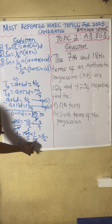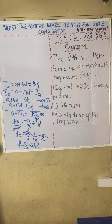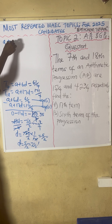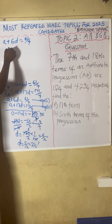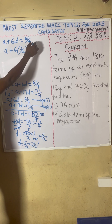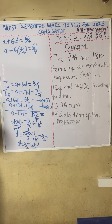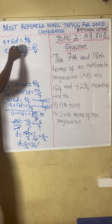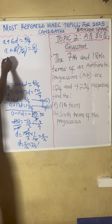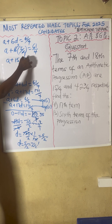Now substitute the value of D equals 5 over 2 into equation 1. Equation 1 is A plus 6D equals 61 over 4. So A plus 6 times 5 over 2 equals 61 over 4. 6 times 5 over 2 gives 15. So A plus 15 equals 61 over 4.